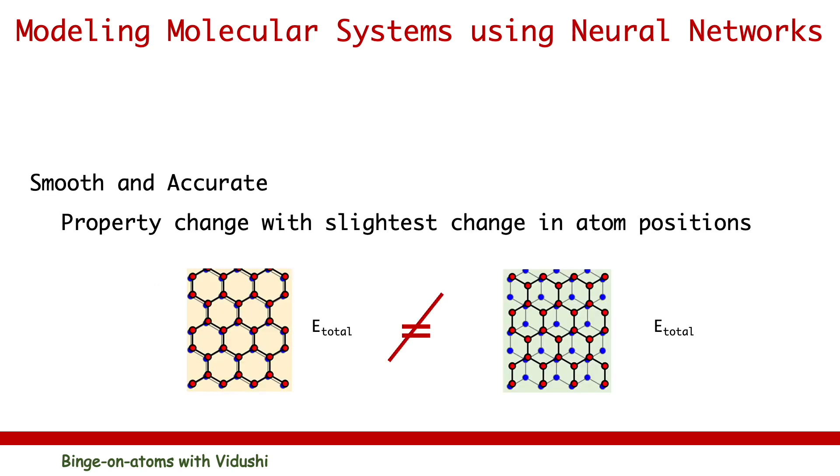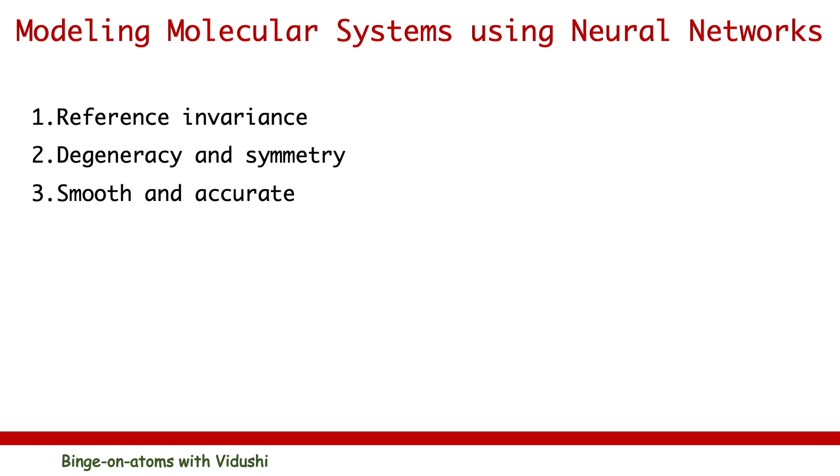Lastly, smoothness and accuracy. Models should be able to predict molecular properties even with slightest change in position of constituent particles. Therefore, neural network architectures that can meet these requirements need to be used for molecular systems. Traditional deep learning neural network models developed in machine learning community do not meet these requirements. So, we need to work with novel special purpose neural network architectures.